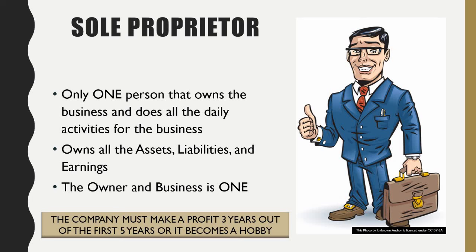If your company goes under, everything you personally own goes down as well. The owner is responsible for all assets, liabilities, and equity. In the eyes of the IRS, the business and the owner are one — they file taxes as one, so anything owned by the business is treated as owned by the person.